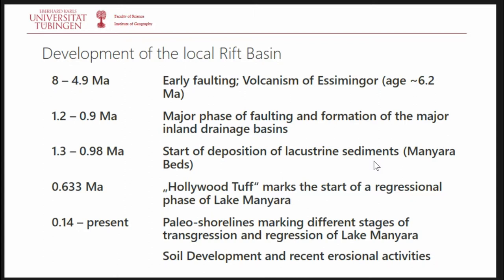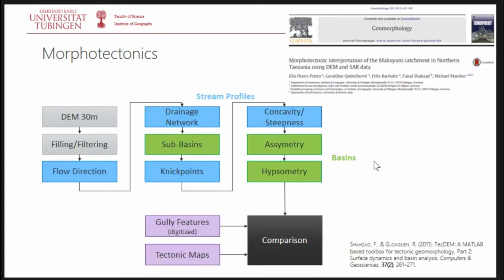The Hollywood Tuff provides a marker for older versus younger landscape features. We have transgression and regression phases, which we also analyzed to get a better picture of these former landscapes. Now I take you into some in-depth work through some publications. One — chronologically first — was a morphotectonic analysis of the whole Makayuni River catchment, which covers a large part of the Lake Maniara basin.